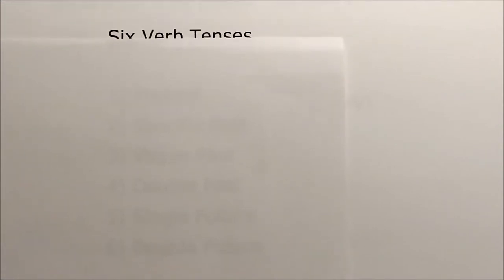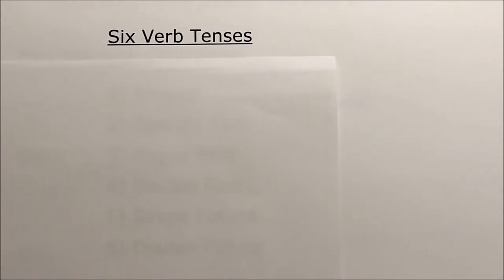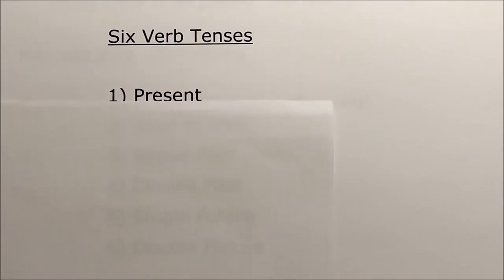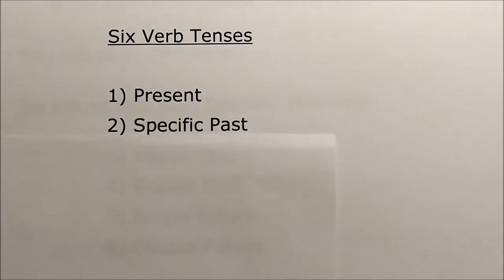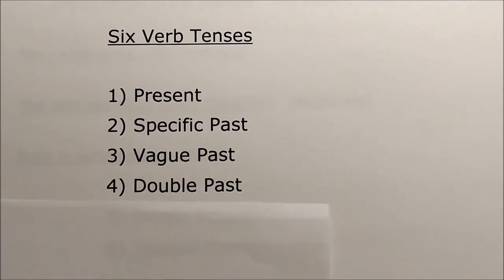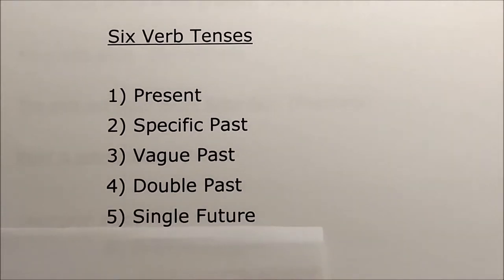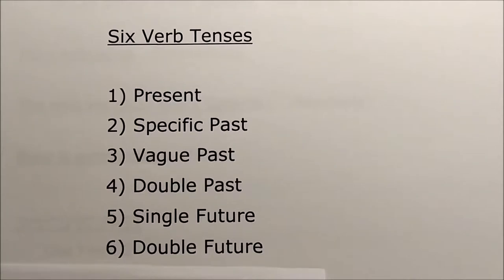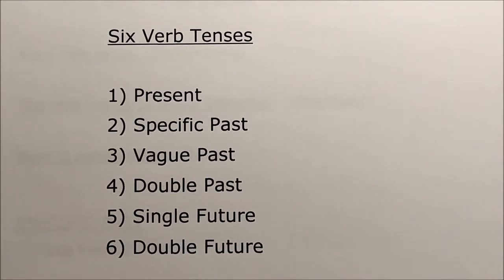When we use verbs, we use them mainly to show action in the present time, the past time, or the future time, and we have verb forms to show all three. These forms of the verb that show time are called tenses, and there are six verb tenses: a present tense, a specific past tense, a vague past tense, a double past tense, a single future tense, and a double future tense. We're going to go into detail about how each tense works.